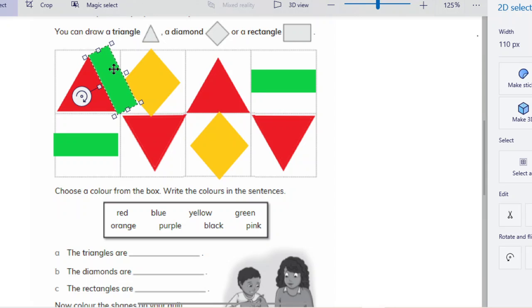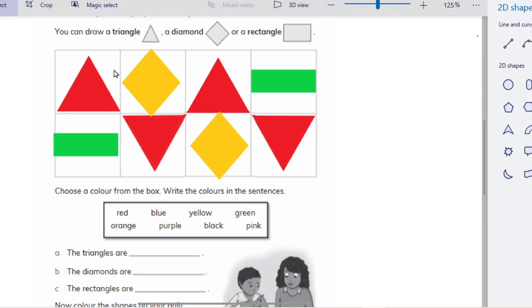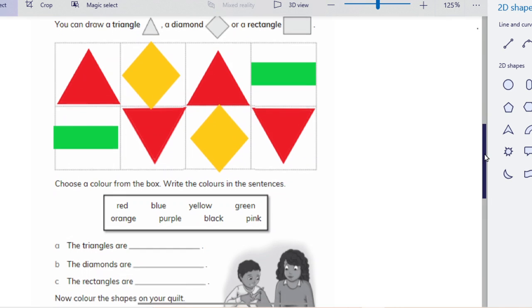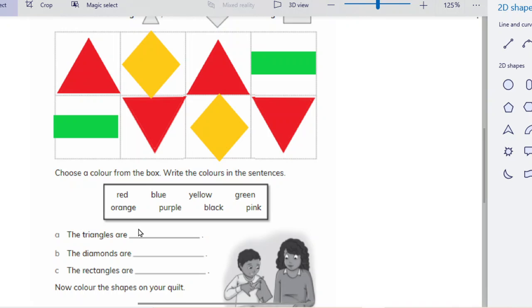If you want to fill it like that, you can fill it like that, no problem. Or just leave it. And then at the bottom you will write 'the triangles are red.' So what will I write here?